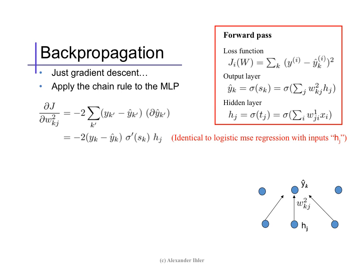Notably, so far, this is exactly the same derivation that we had for logistic mean squared error regression, since a single layer, given the values of h, is just a perceptron with a logistic sigmoid on the output.